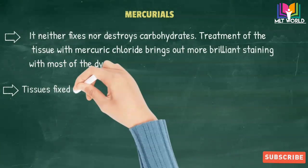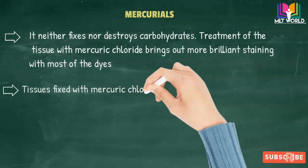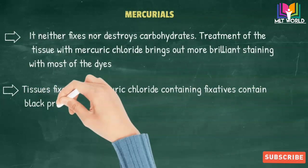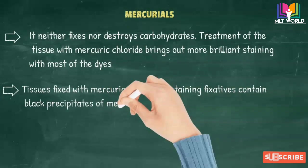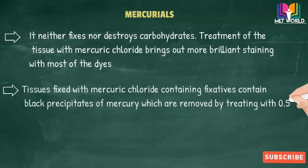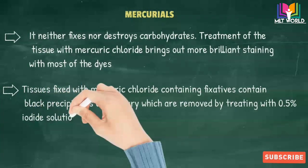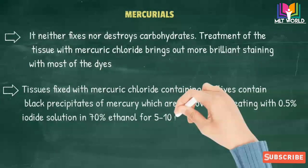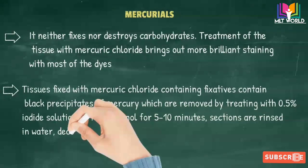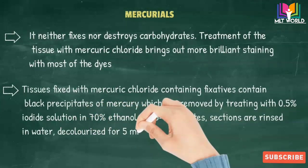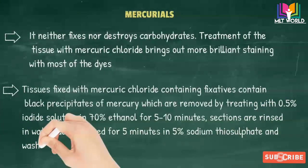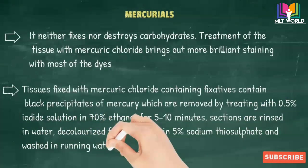Tissues fixed with mercurial chloride-containing fixatives contain black precipitates, which are removed by treating with 0.5 percent iodide solution in 70 percent ethanol for 5 to 10 minutes. Then sections are rinsed in water and decolorized for 5 minutes in 5 percent sodium thiosulfate and washed in running water.